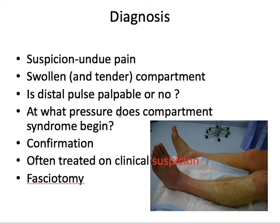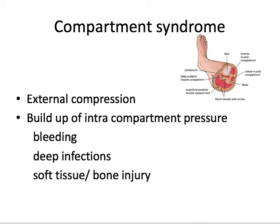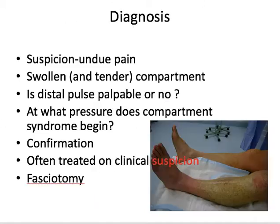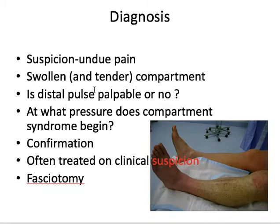At what pressure does compartment syndrome begin? The tissue pressure only needs to increase to about the capillary perfusion pressure — just about 25 to 30 millimeters of mercury. Then compartment syndrome sets in because the capillaries cannot perfuse the tissues against this increased pressure. So at just 25 to 30 mmHg, the distal pulse is still going to be palpable. Therefore, distal pulse is not a diagnostic criterion for compartment syndrome — with one exception I will discuss later.